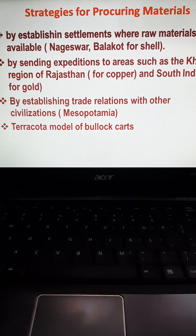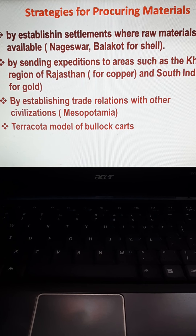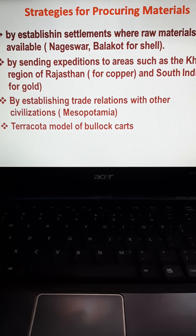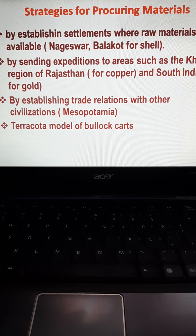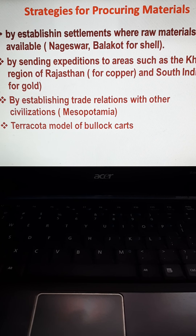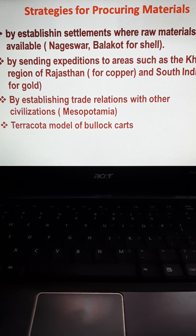Now, the strategy for procuring raw material — how was the material procured? Before that, in order to identify particular centers of craft production, archaeologists identified each center on the basis of the raw material found there. Raw materials such as stone nodules, whole copper, wood tools, unfinished objects, and waste material — whatever was thrown away — were found, and based upon that, the center was identified.